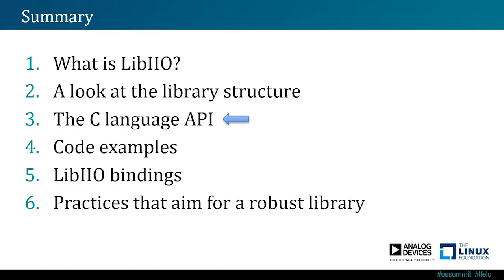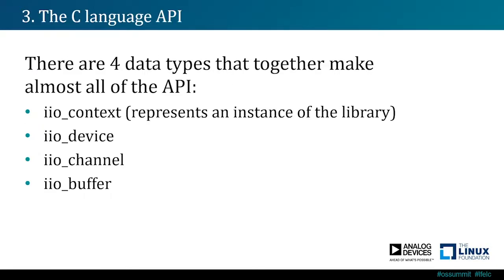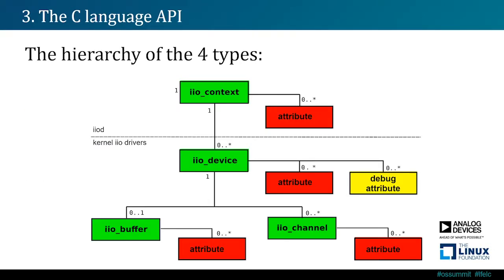The C language API has four types that together make almost all of the API: the context, the device, the channel, and the buffer. The context represents an instance of the library. A context can have zero or many devices, while a device can have zero or many channels but can have only zero or one buffer. Each of the four base types can have an attribute defined by a name which is a C string, and each attribute can have a value or multiple values. Besides this, the device can have debug attributes used for debug purposes.